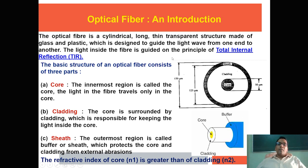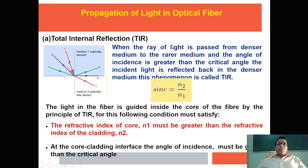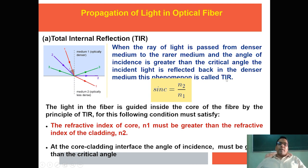The principle of optical fiber is based on total internal reflection. To understand light propagation through the fiber, we need to know the basics of total internal reflection. When a ray of light travels from a denser medium to a rarer medium and the angle of incidence is greater than the critical angle, the incident light is reflected back into the denser medium. This phenomenon is called total internal reflection.